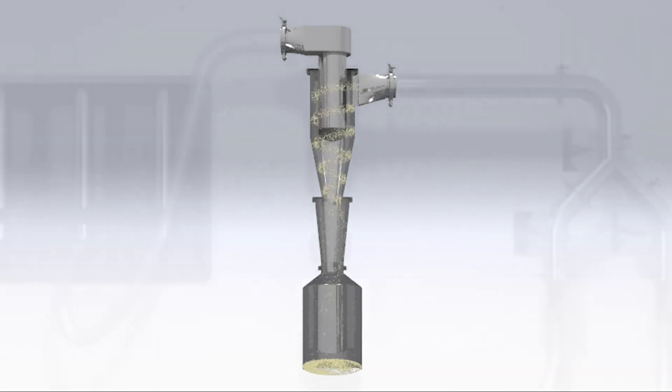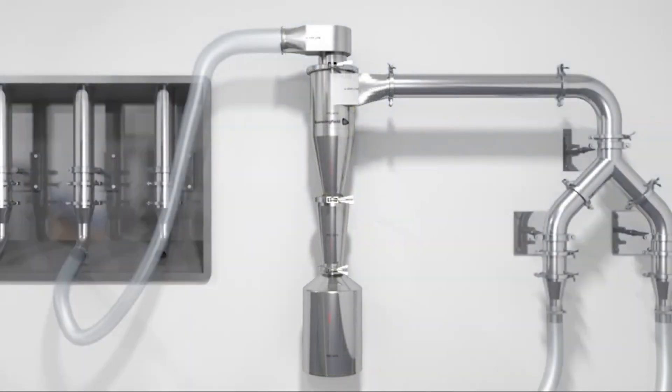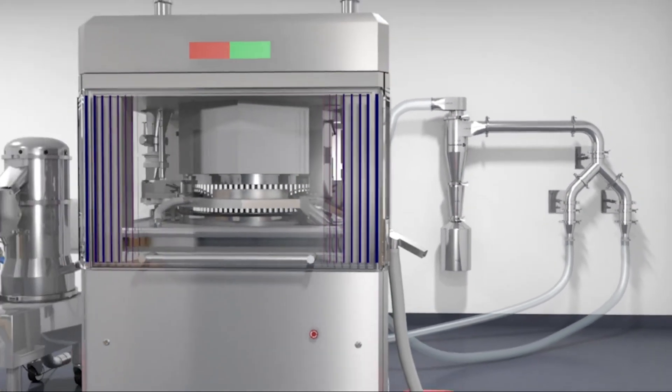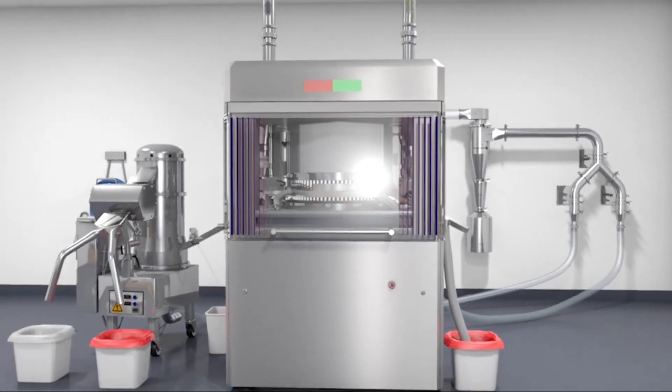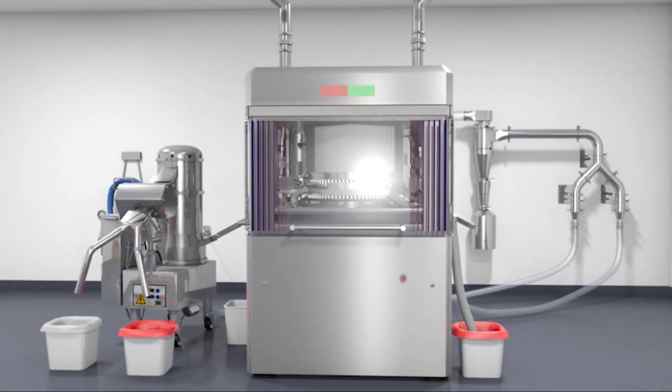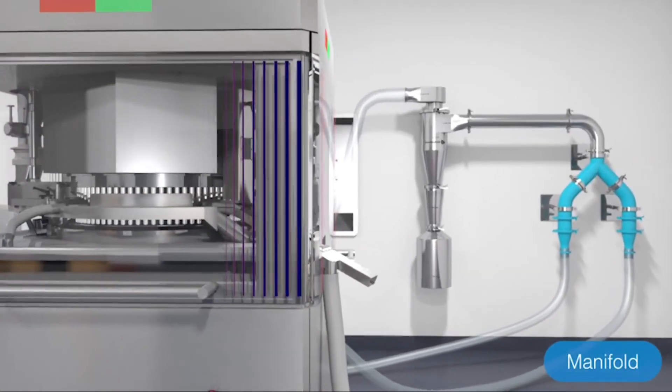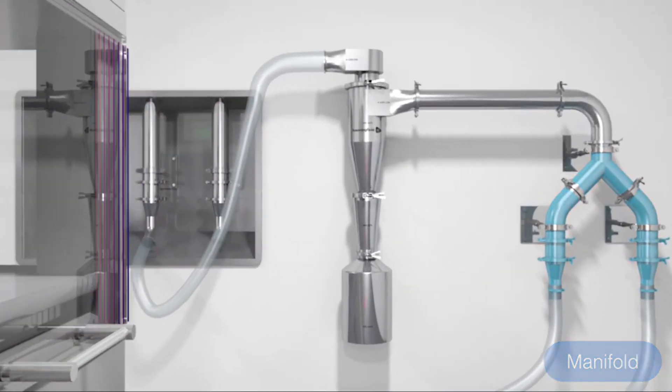Many modern tablet presses have multiple extraction points or incorporate a tablet dedusting unit. Likewise, a capsule filling machine will often integrate a capsule polishing machine. The cyclone is able to accommodate these multiple airflows with the use of a manifold for collection from multiple points.